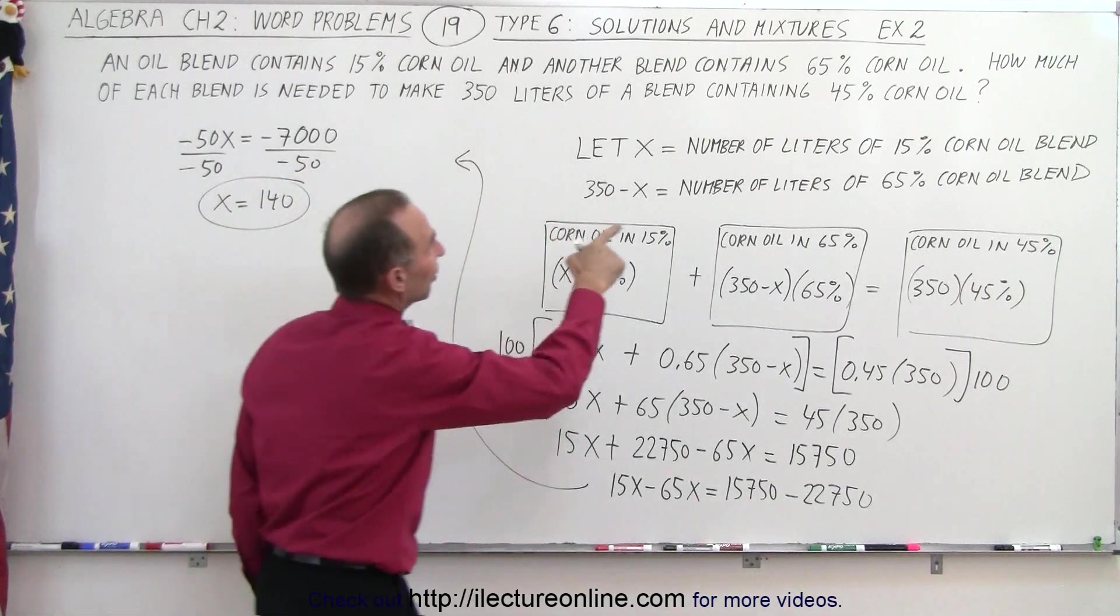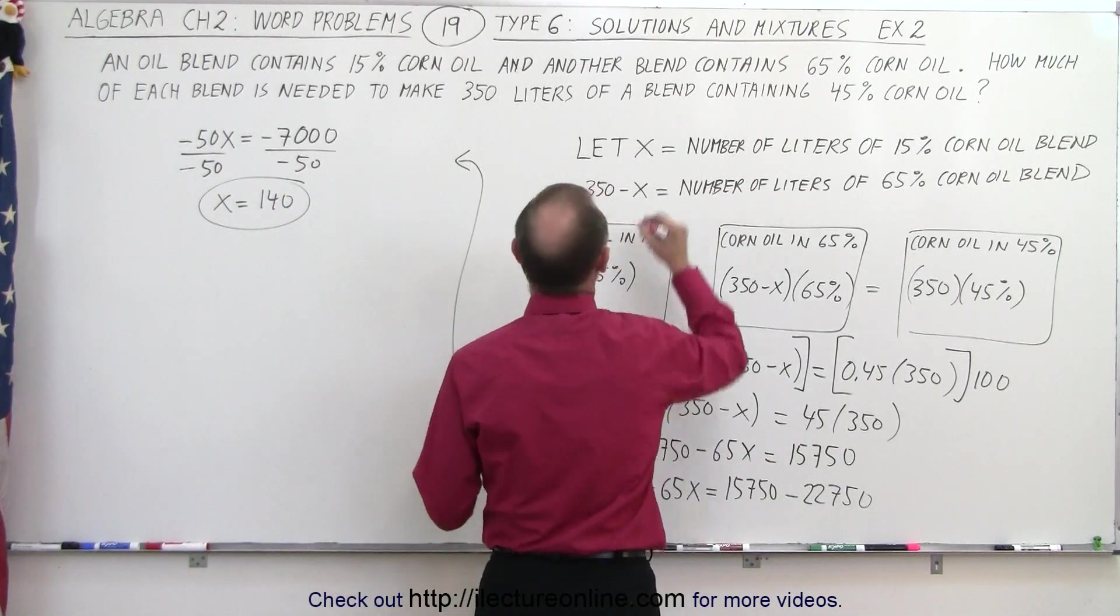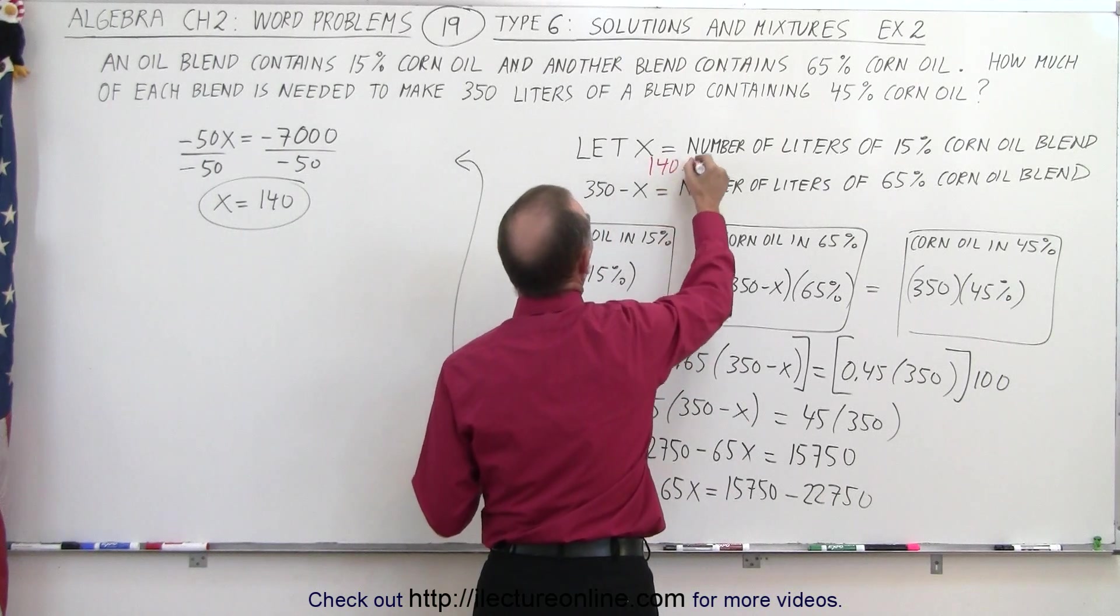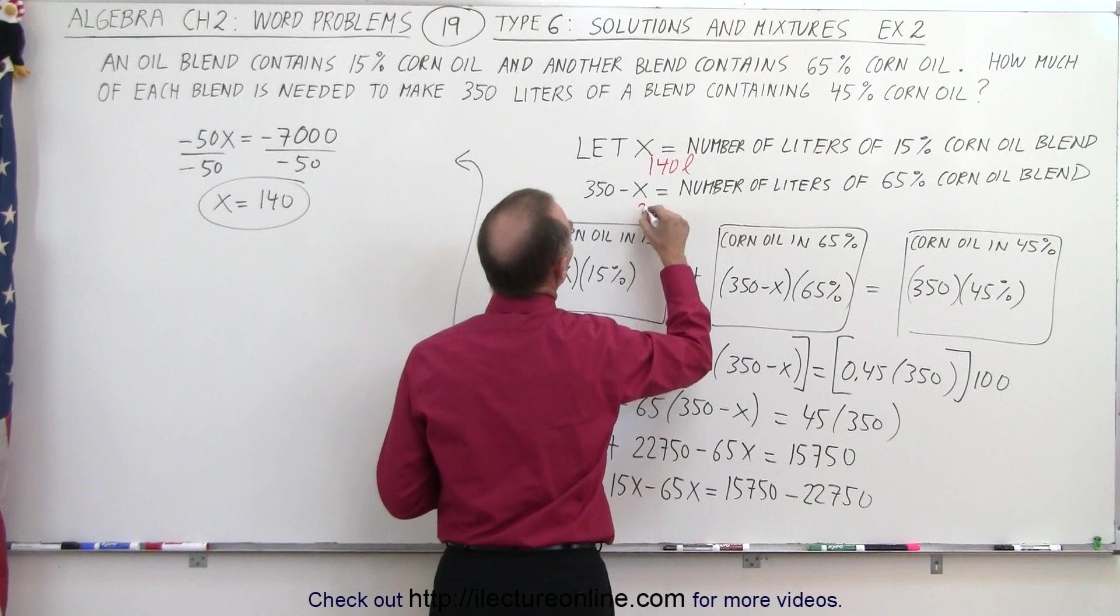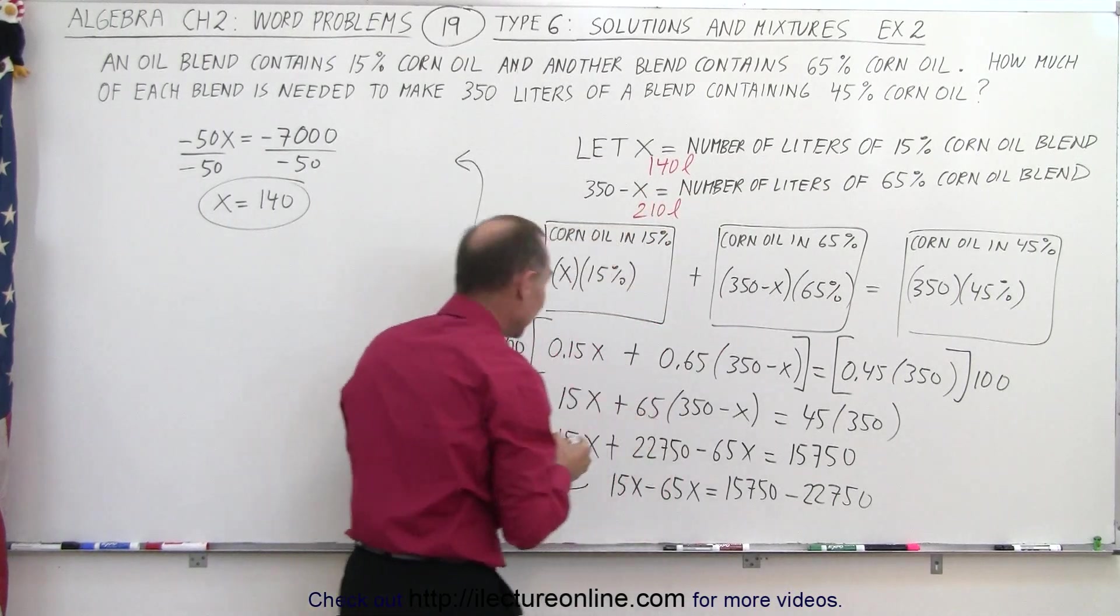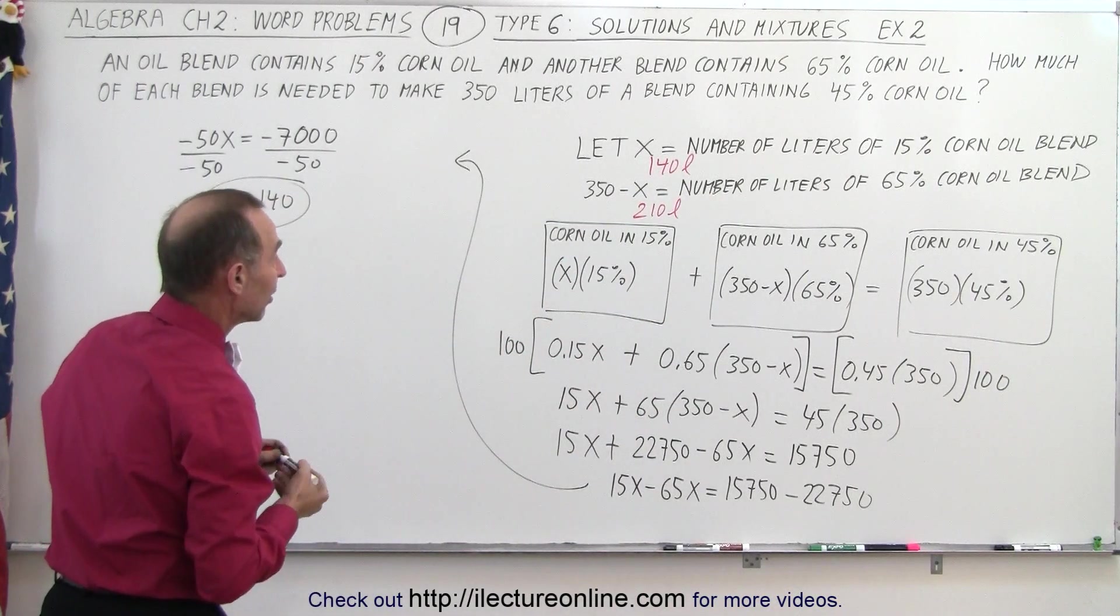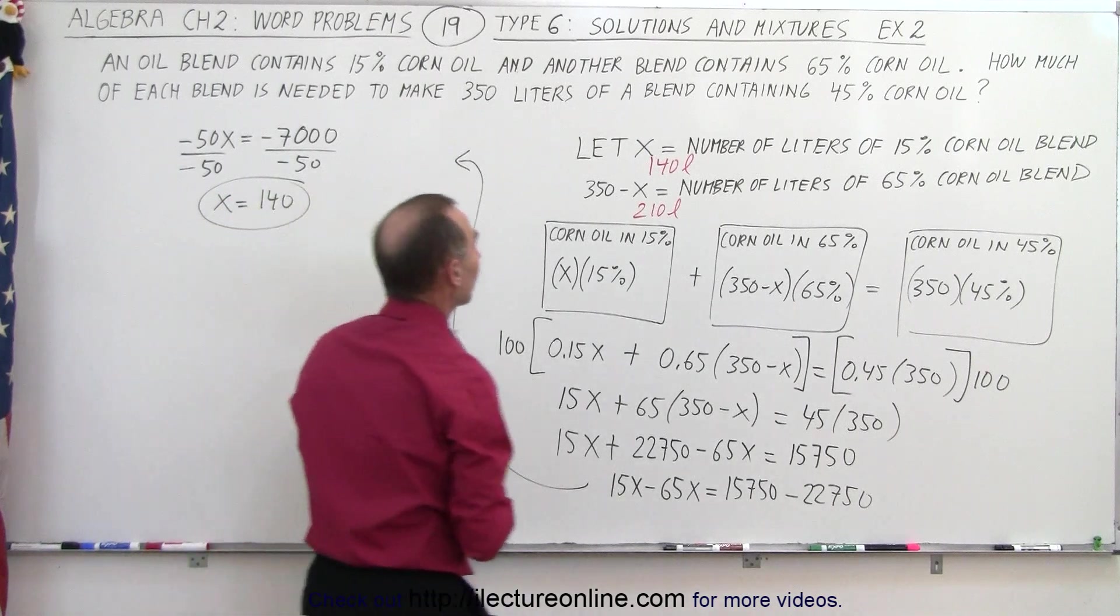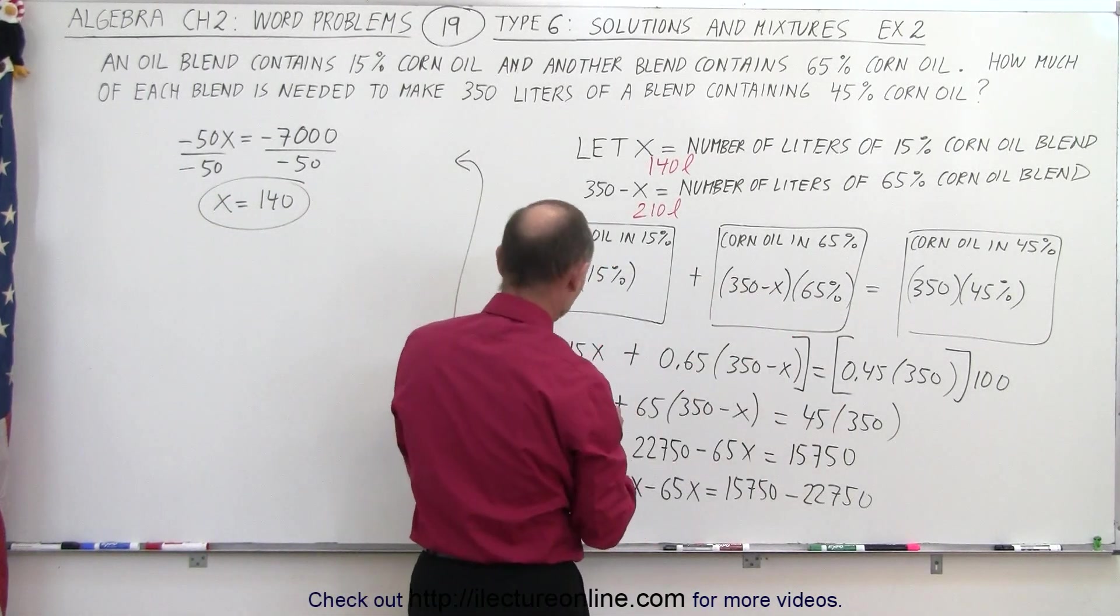And since x represented the number of liters of the 15% solution, that means we have 140 liters of this solution. And 350 minus 140, which is 210 liters of this solution together, that's 350 liters. Now let's make sure that we have this correct by calculating the amount of corn oil in each of the two blends and then in the final blend.